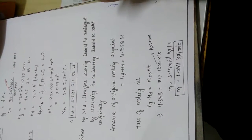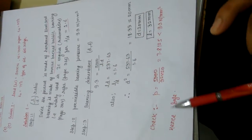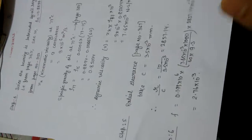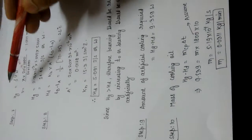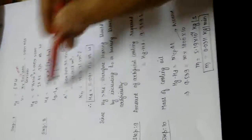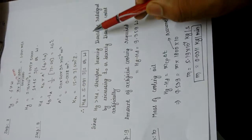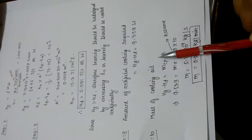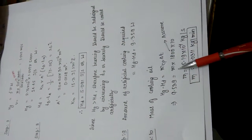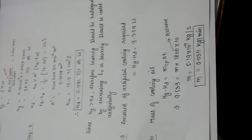To summarize the design steps: Step 1 is L/D ratio; Step 2 is bearing pressure; Step 3 is bearing dimensions with a check; Step 4 is dynamic viscosity; Step 5 is radial clearance; Step 6 is coefficient of friction; Step 7 is heat generated (Hg); then heat dissipation (Hd). Compare Hg and Hd — if Hd is greater than Hg, the design is safe and no artificial cooling is needed. If Hg is greater than Hd, find the amount of artificial cooling and mass of cooling oil. In the next lecture, another numerical will be covered.